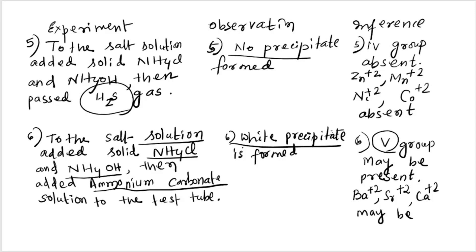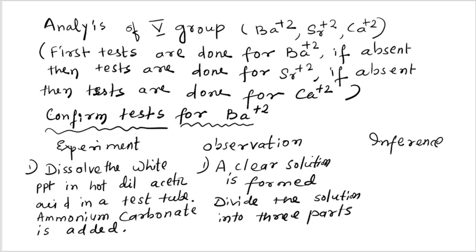To summarize the wet test general procedure: zero group — NaOH, no ammonia smell, absent. Group one — dilute HCl, no white precipitate, absent. Group two — pass H₂S gas, no precipitate, absent. Group three — ammonium chloride and ammonium hydroxide, no precipitate, absent. Group four — pass H₂S gas, no precipitate, absent. Group five — ammonium chloride, ammonium hydroxide, and ammonium carbonate: white precipitate formed — positive test for group five.